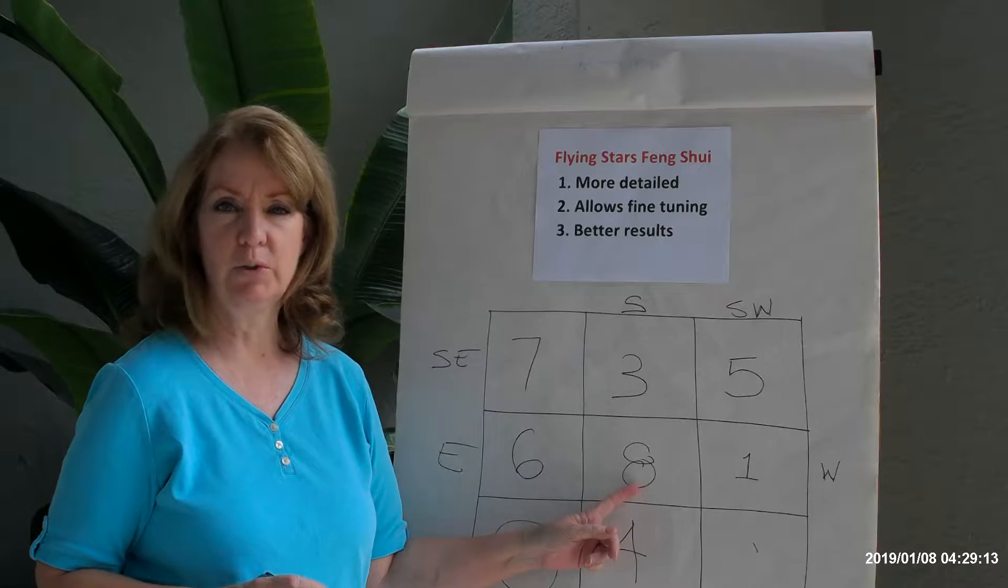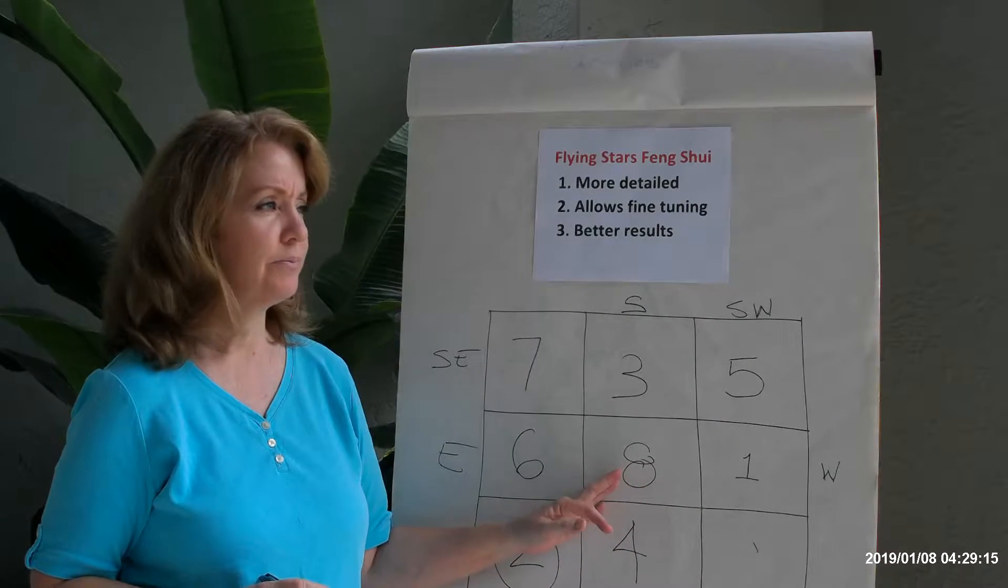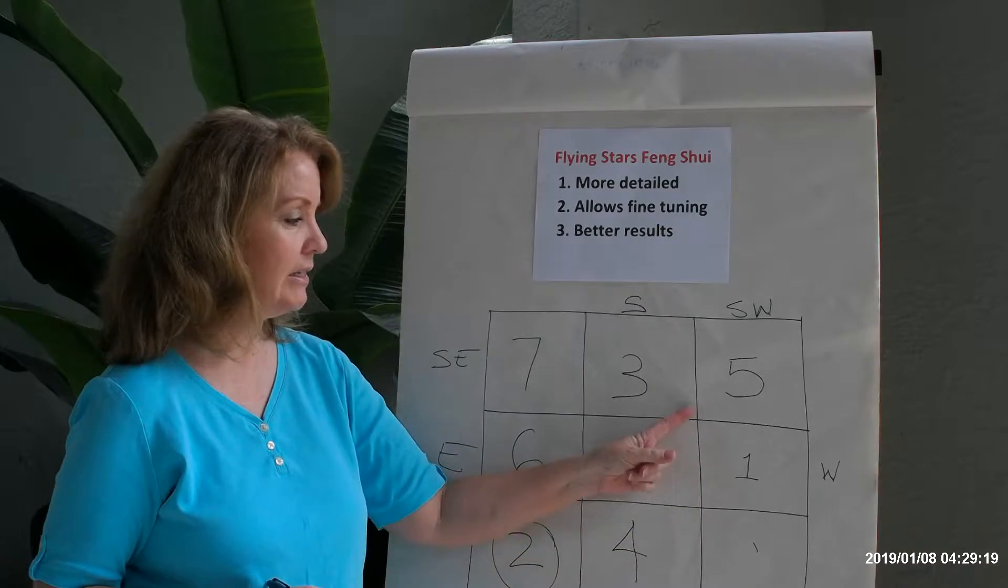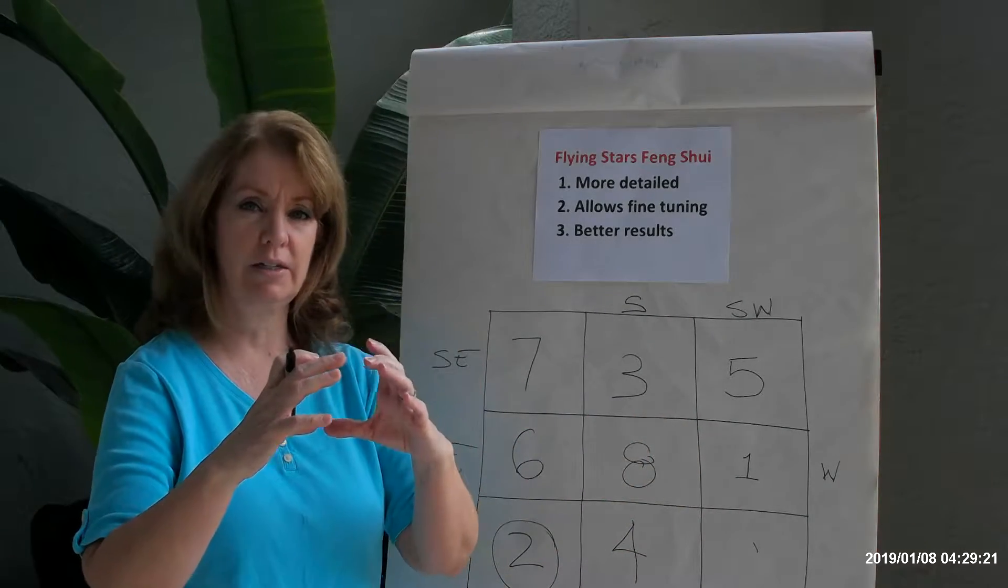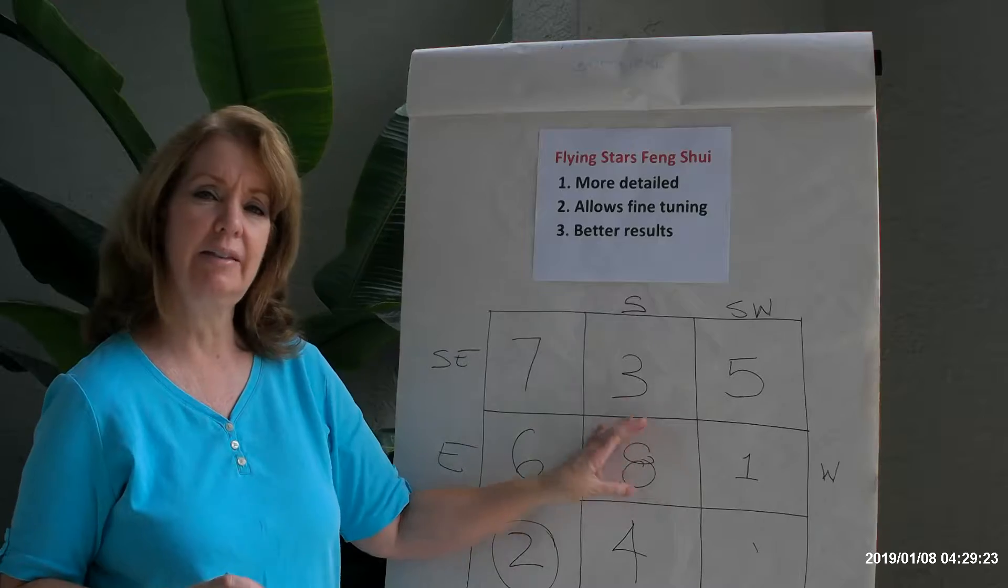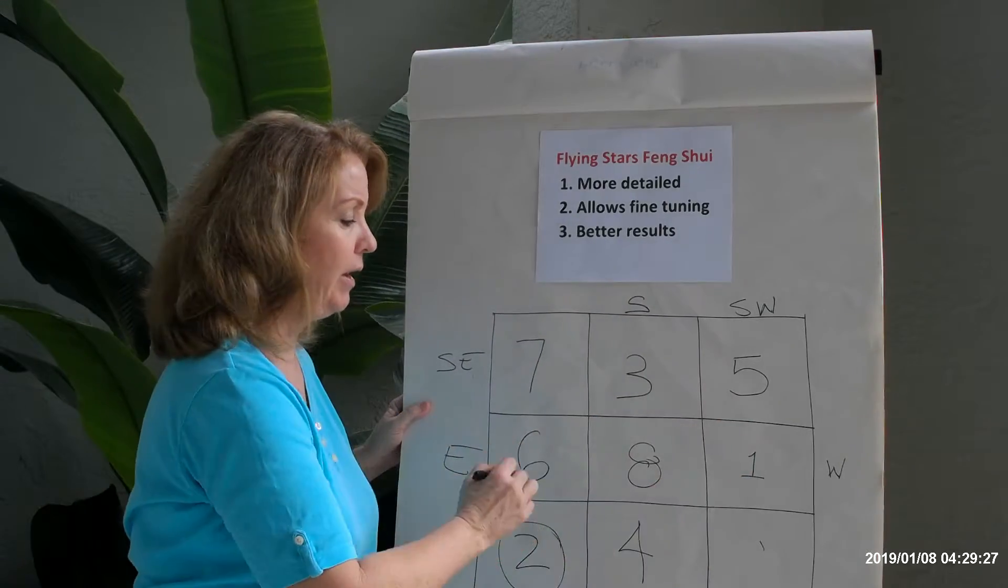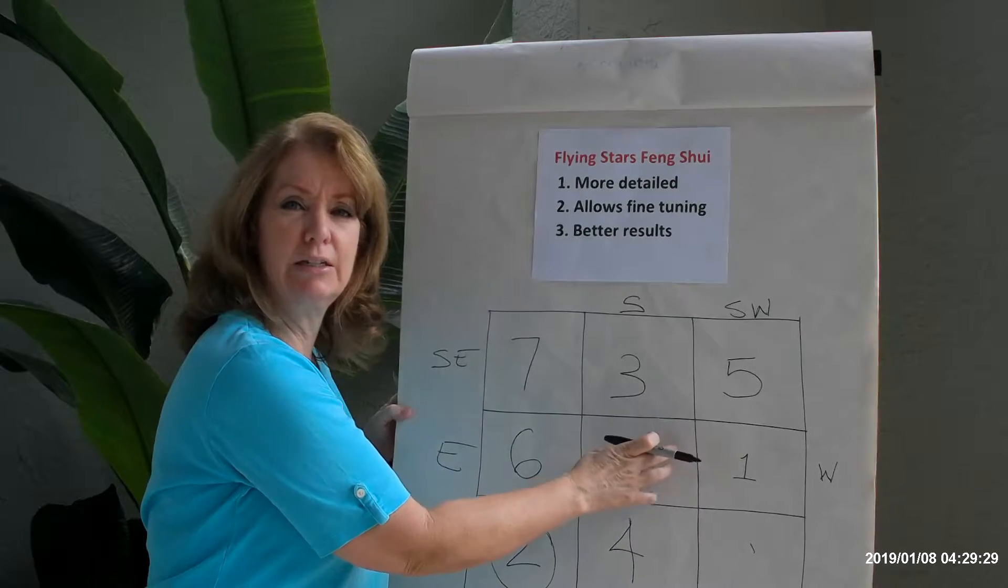Now most feng shui masters will tell you that anything that sits in the middle is locked, so it's hard to get the energy of that star because it's being surrounded by all these other stars. So it's like it's blocked in.